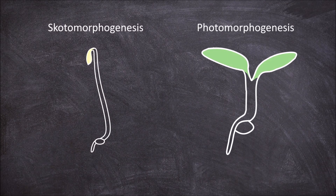In this video we are going to discuss the difference between scotomorphogenesis and photomorphogenesis. These are terms used to describe whether a seedling develops in the light or the dark.